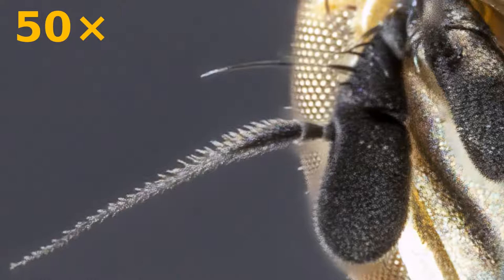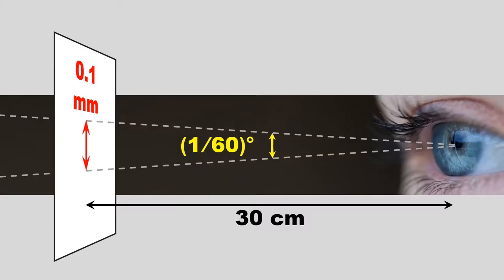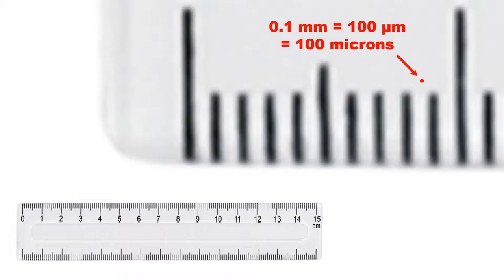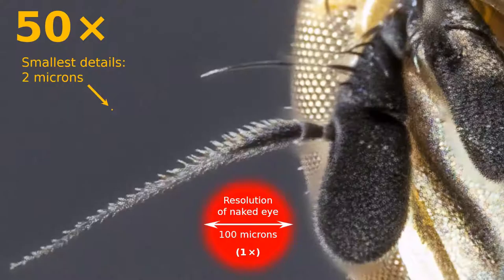Why? It's because the magnification factor of an image is defined relative to the size of the details that can be distinguished by a middle-aged human with good vision, which is roughly 0.1 millimeter or 100 microns. The smallest details that can be distinguished on the image of the fly are roughly 2 microns across, which is 50 times better than the naked eye limit.